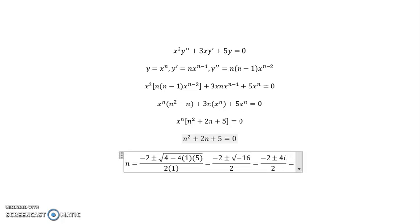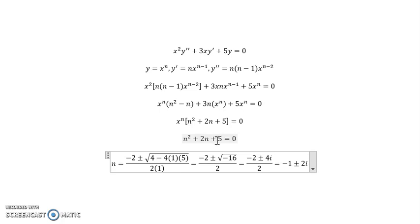And the square root of negative 16 is going to be plus and minus 4i. And when you're simplifying, keep in mind, the denominator has to divide both terms in the numerator. And so we get negative 1 plus and minus 2i, because 4 divided by 2 is 2. So this is our complex pair of roots.